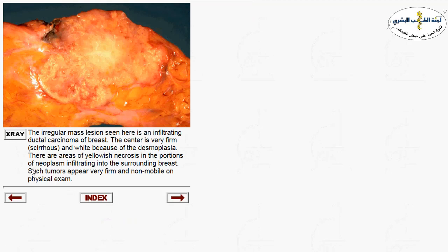Breast carcinoma grossly appears as an ill-defined mass characterized by hardness and firmness. This is related to desmoplasia — a stromal reaction to the invasive component. When malignant cells invade the stroma, the stroma reacts with proteoglycans and types of fibrous stroma, giving the tumor its firmness on cutting surface.